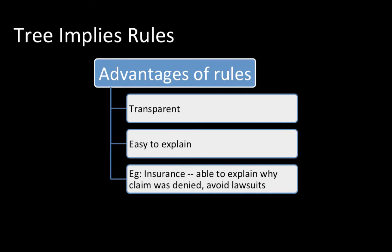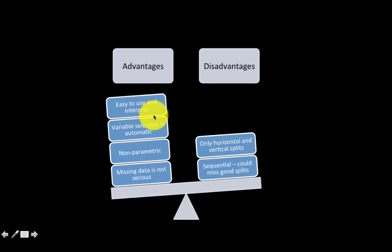Now rules are useful because they're very transparent, easy to explain, and very easy to understand. Advantages, as we've already said: easy to use and interpret, variable selection is automatic. You don't have to eliminate attributes—if some attributes are not performing well or they're not useful, the tree method will simply ignore them. So you may have data with 100 predictor attributes; you don't have to worry about reducing them to a meaningful number. The tree will take care of it. It's non-parametric in the sense that we don't have to rely on any specific statistical parameters, and missing data doesn't seriously affect the method. These are all very solid advantages.